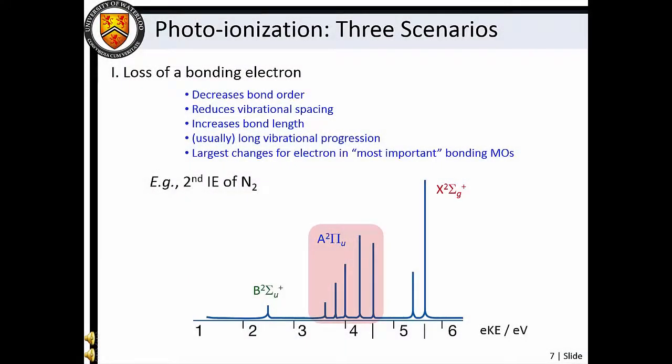We can describe three general scenarios for photoionization and the resulting photoelectron spectra. The first is loss of a bonding electron. In this case, we expect a decrease in bond order, a reduction in vibrational level spacing, and an increase in bond length for the ion compared to the neutral. Consequently, a long vibrational progression is often observed in the photoelectron spectrum. The largest changes in bonding character are associated with removal of the most important bonding electrons, those that are low in energy and are especially stabilizing with respect to the molecular nuclear configuration. So we can expect that removal of the most important bonding electrons will result in the longest progressions in photoelectron spectra.